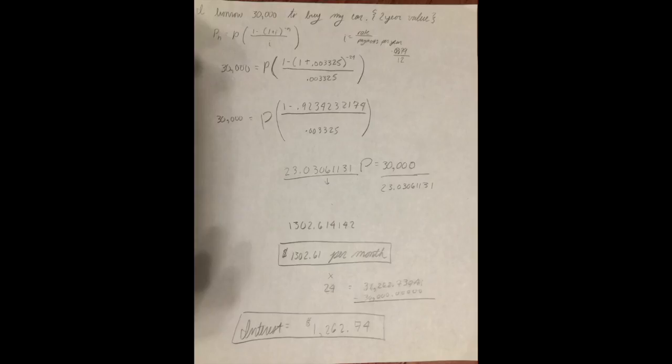Now, once you do all that, and you can see by all my work that it's essentially the same exact thing, but it's a huge difference once you get to the per month value. So, it is 23.03061131P equals 30,000. Now, take 30,000 and divide by that large number, and you get 1302.614142. And, once you round it, it's $1,302.61 per month.